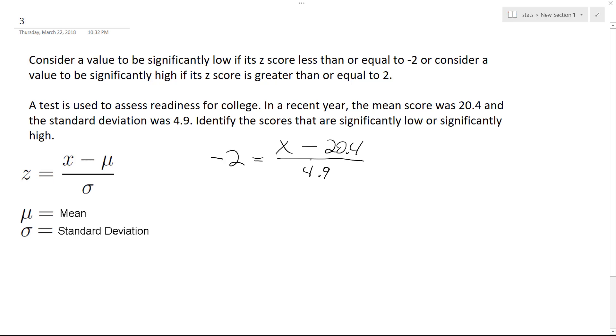We just solve for X in this case, and then we do this for negative 2, which is the low end, and then 2, which is the high end. So we get negative 9.8 is equal to X minus 20.4. We add 20.4 and what we end up with is 10.6.